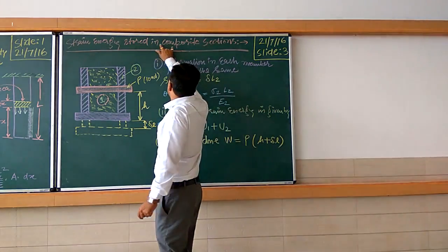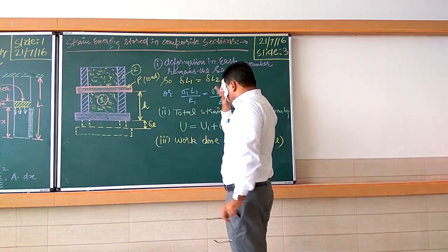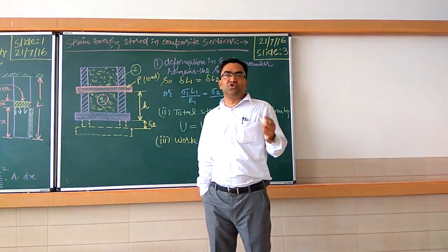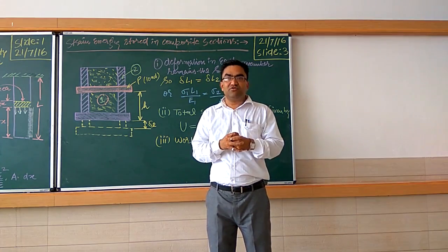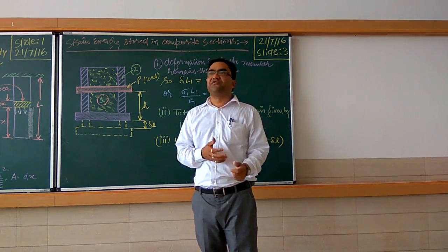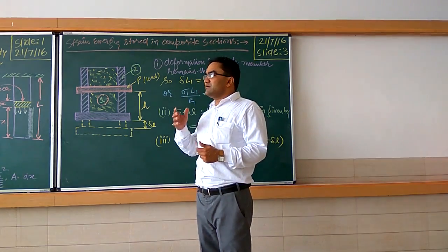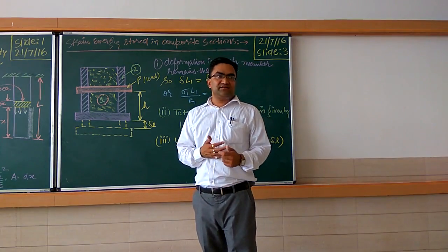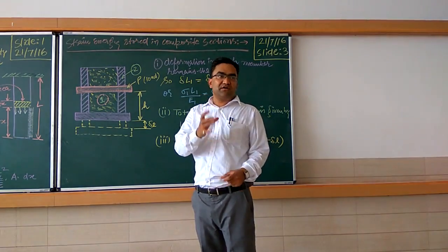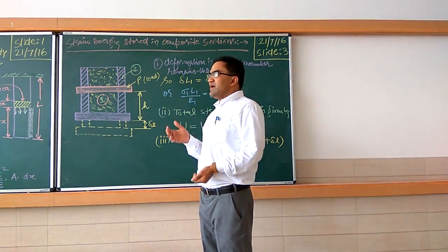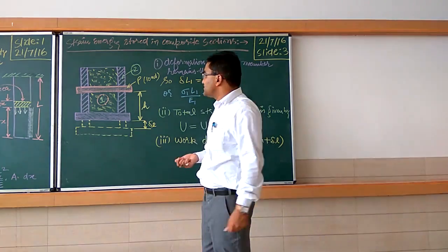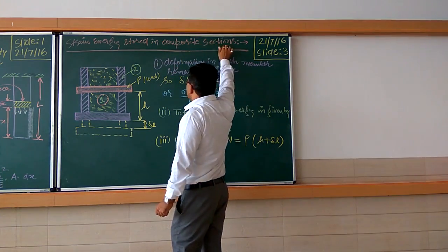Now let us understand today's last topic — the strain energy stored in a composite section. Composite section means when the materials of the two sections are combined together, meaning the bar is made up of two or more materials. Like a concrete column — that is an example. Let us understand the strain energy stored in a composite section.